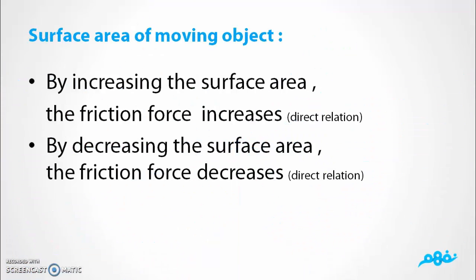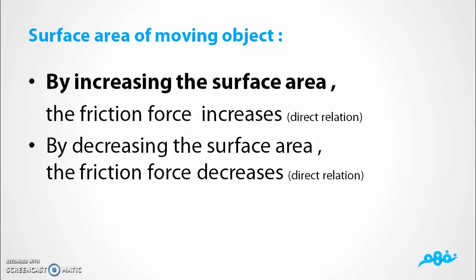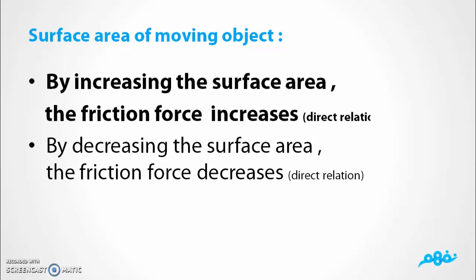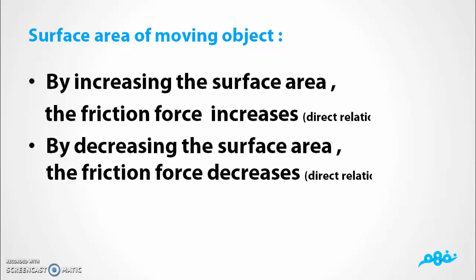Surface area of moving objects. By increasing the surface area, the friction force increases, which is called direct relationship. By decreasing the surface area, the friction force decreases, which is called direct relationship too.